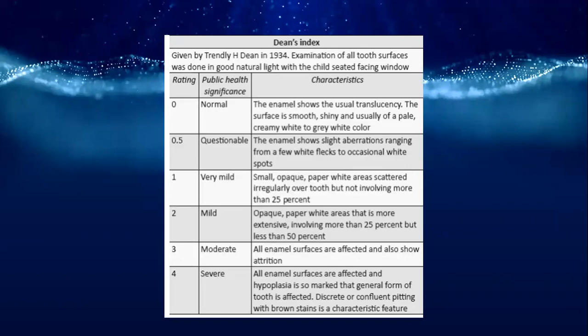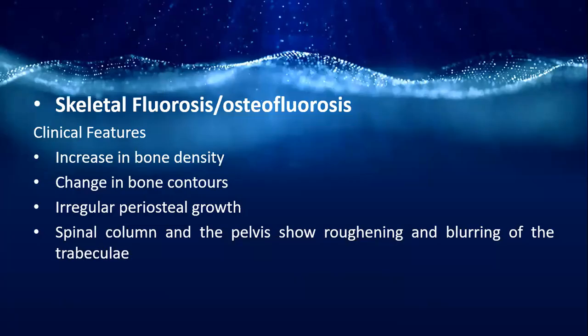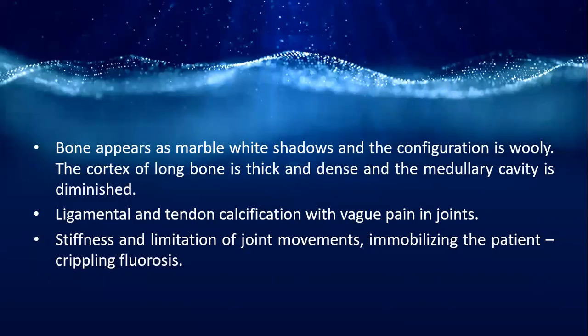Brown staining — historically referred to as Colorado stain — is a characteristic feature of severe fluorosis. Skeletal fluorosis (osteofluorosis) features increased bone density, changed bone contour, irregular periosteal growth, ruffling and blurring of trabeculae in the spinal column and pelvis visible on radiographs, and marble-white bone shadow with thick cortex of long bones and diminished medullary cavity.